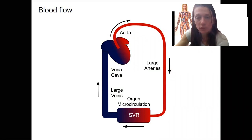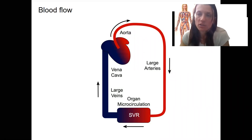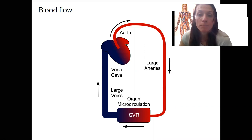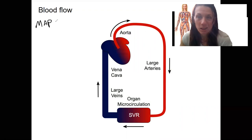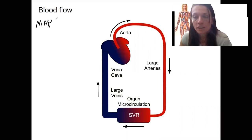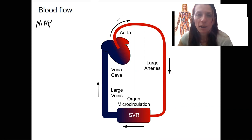I want to go back and do one last video related to the factors that affect mean arterial pressure. Mean arterial pressure is super important — it can't be too high or too low over time. We're going to talk next week about all the factors in detail that can alter this, but I want to go back and give you a big picture for now.